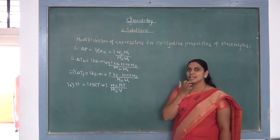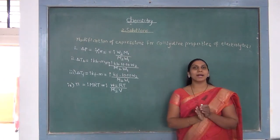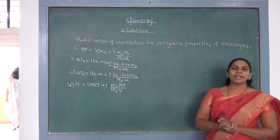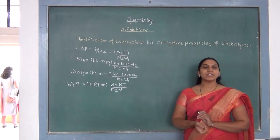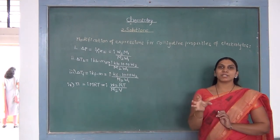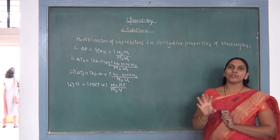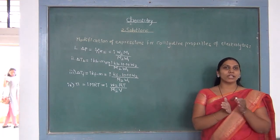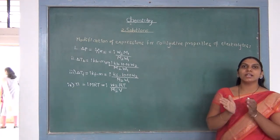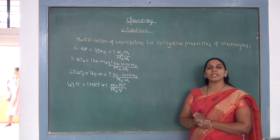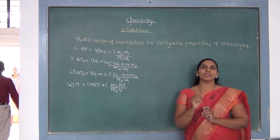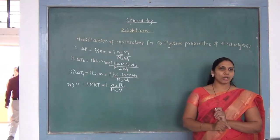Students, just now we studied about the Van't Hoff factor, which gives us the mathematical expression for the ratio of colligative properties of electrolytes divided by the colligative properties of non-electrolytes of the same concentration.